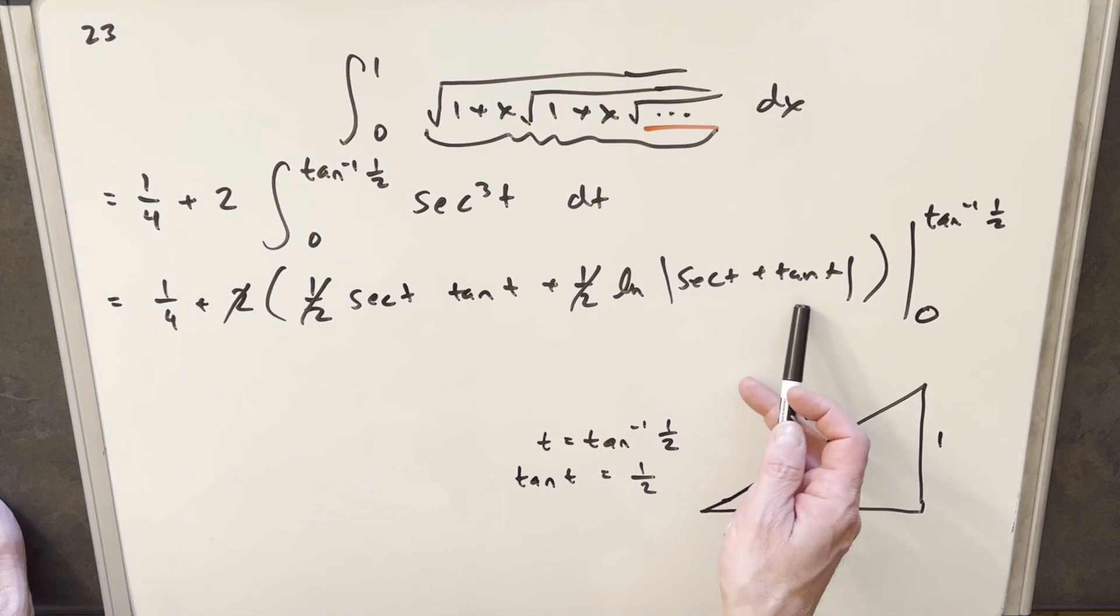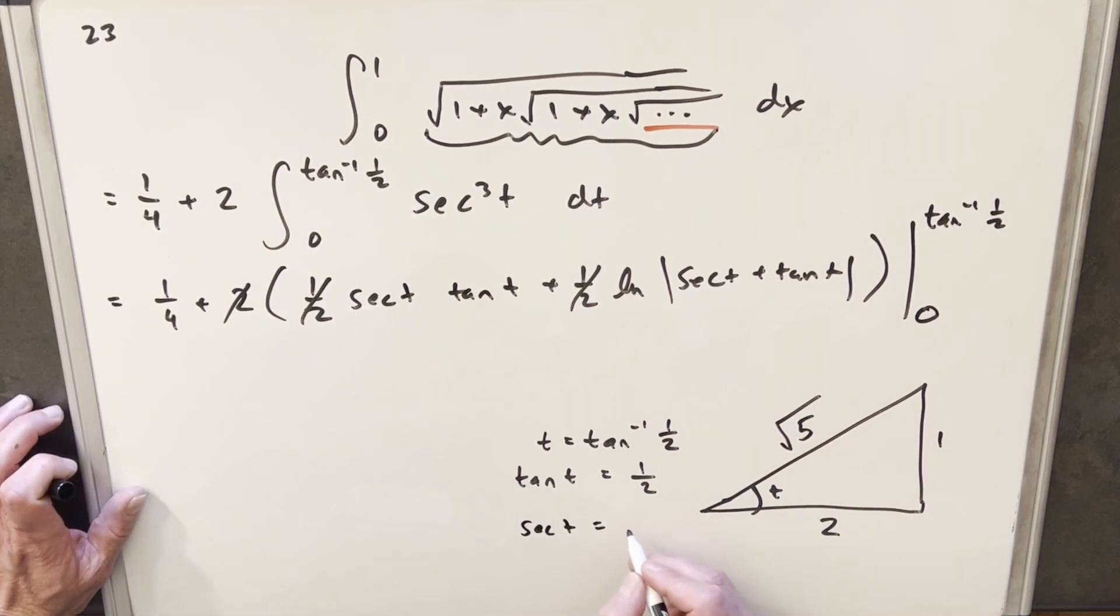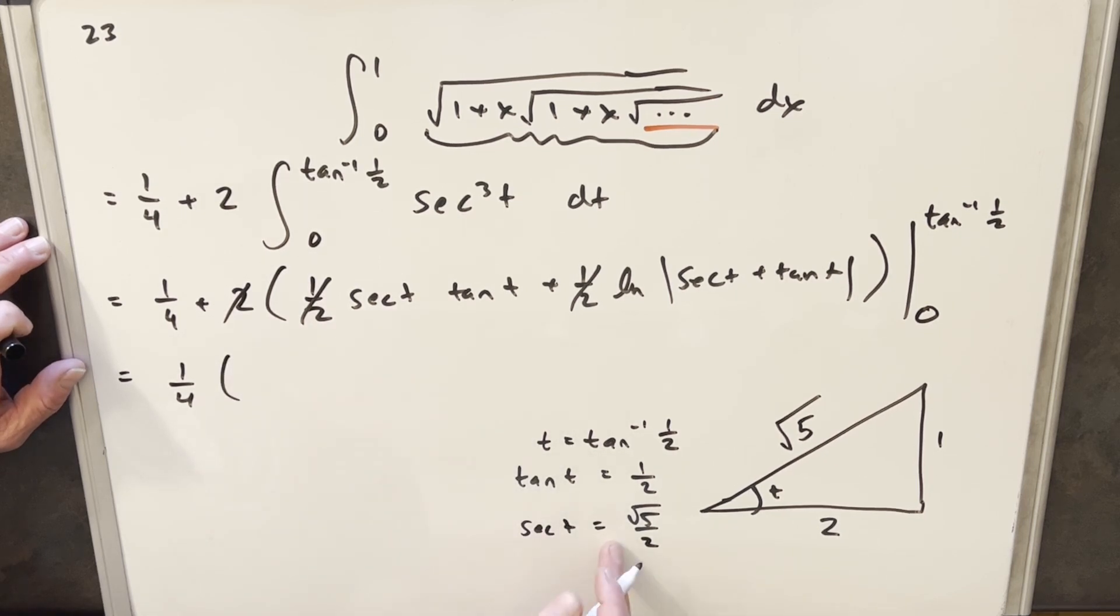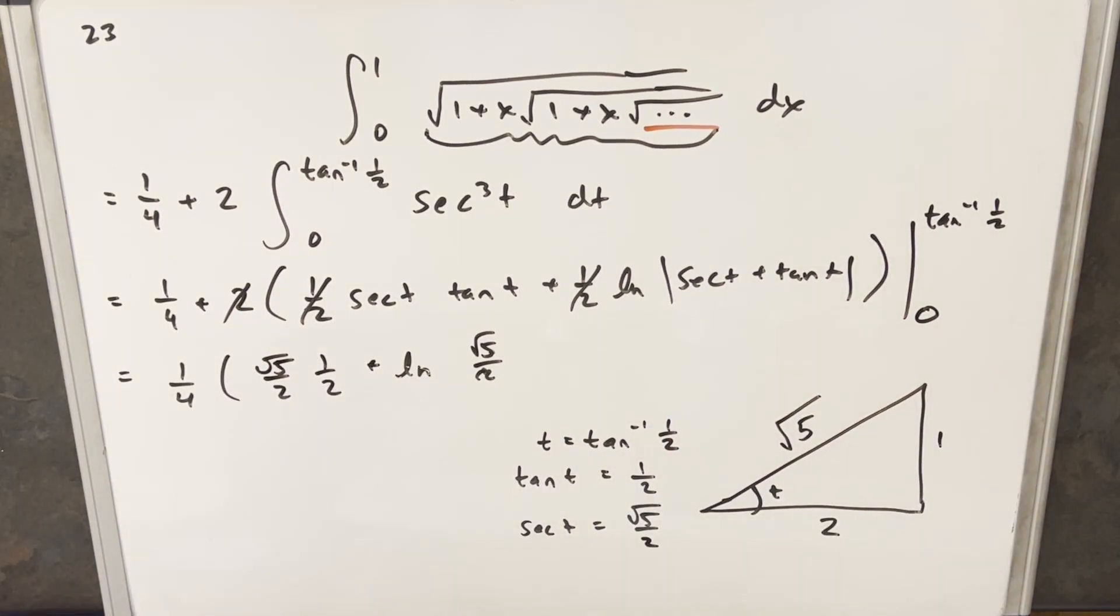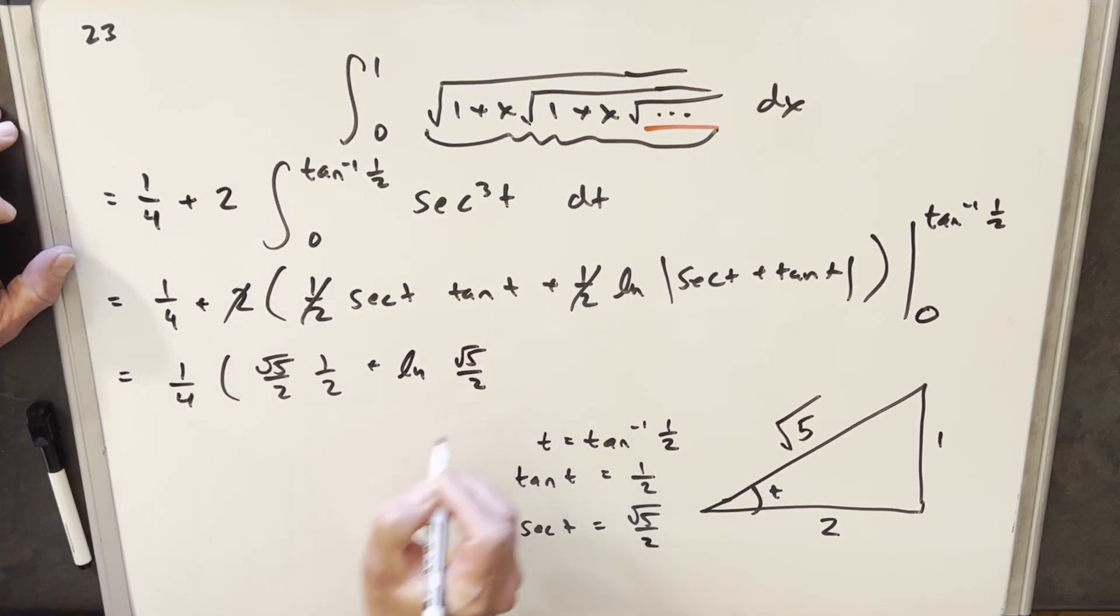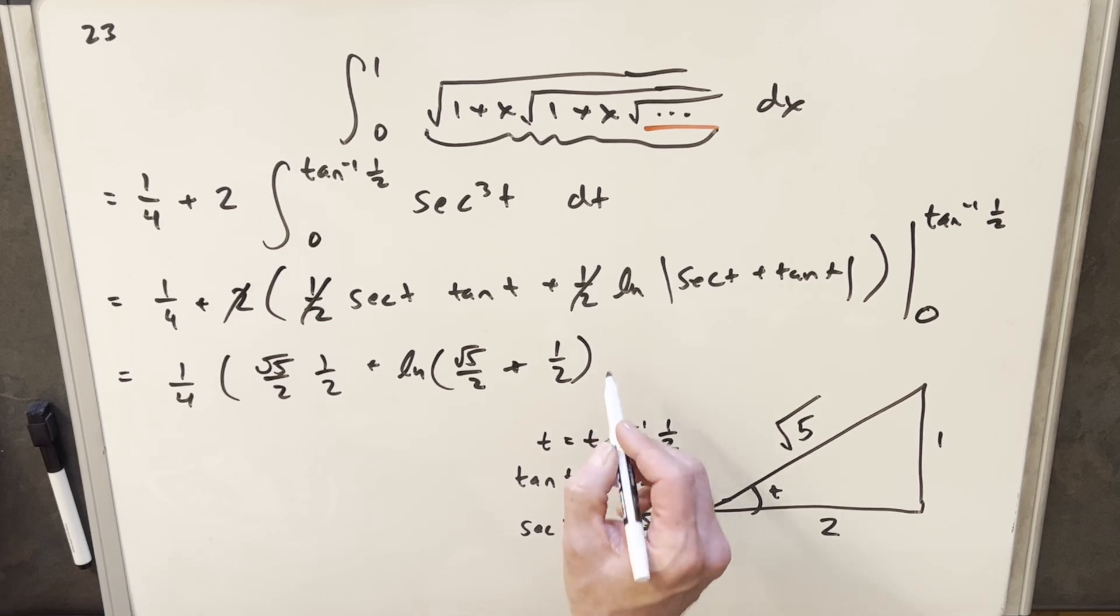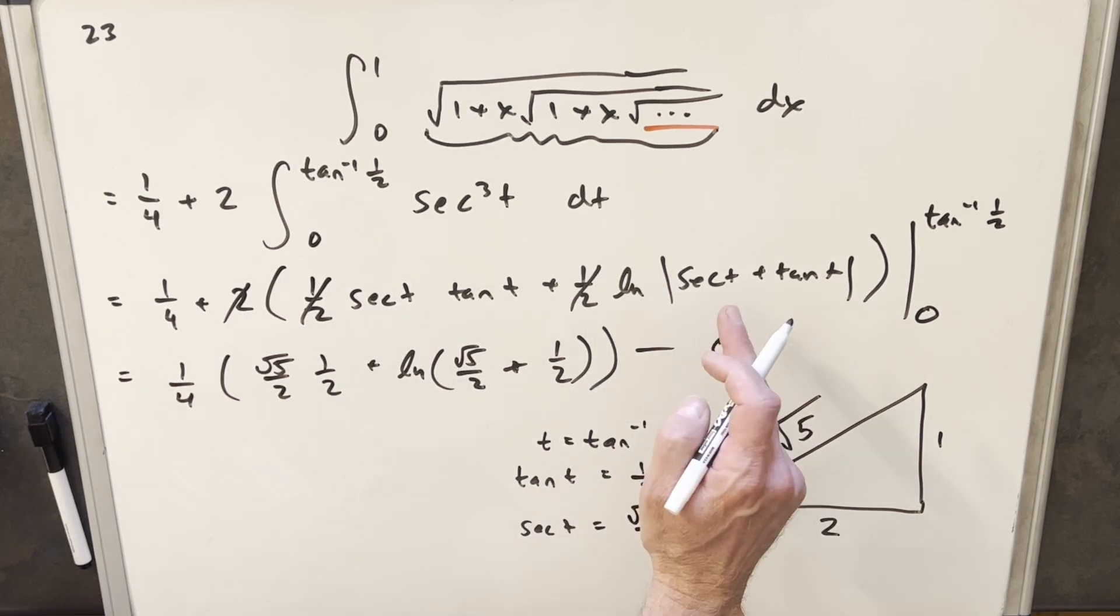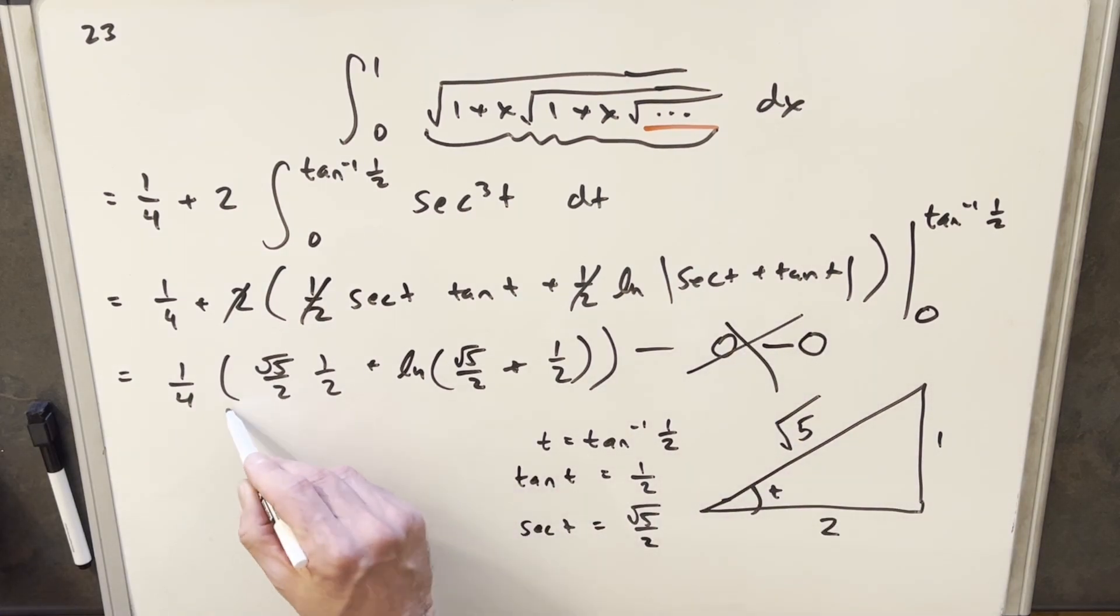To evaluate, we need tan which we have, and we need secant. Secant in this triangle is hypotenuse over adjacent, so secant of t is square root of 5 over 2. With this, we have everything we need. We're going to have our 1 fourth in front. Secant t is square root of 5 over 2, tan t is just a half, plus natural log square root of 5 over 2 plus tan t is 1 half. I'm going to get rid of the absolute value because this is clearly positive. Next we need to plug in 0. Secant of 0 is 1, but tan of 0 is 0. Natural log of secant of t is 1, tan of t is 0, natural log of 1 is just 0. So we don't have to worry about this, we just need to simplify this and we're done.